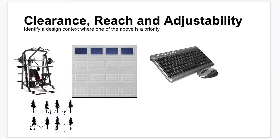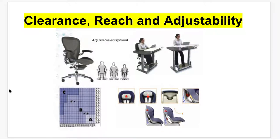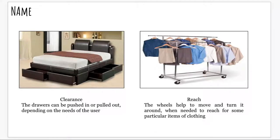In addition to adjustability, there is clearance and reach. These are important factors to think about as you're designing — how to design based on that reach, how much clearance something has, and if it's adjustable or not. For example, when they looked at this chair, these chairs are adjustable, but they also consider reach — how far across does somebody need to get, how low do they need to go. The same thing with car seats — how do these things move, and clearance, so things go over or around and you don't bump into them. Examples include drawers that can be pushed in and out underneath a bed, and wheels that allow hangers to move around, but also reach — how far you need to get to reach particular items.